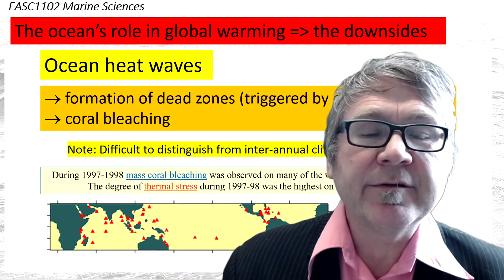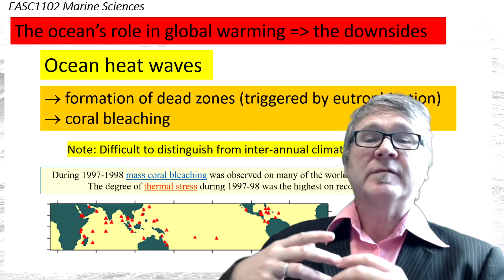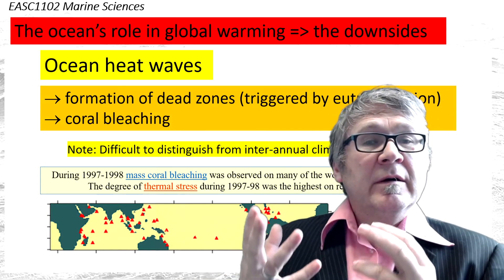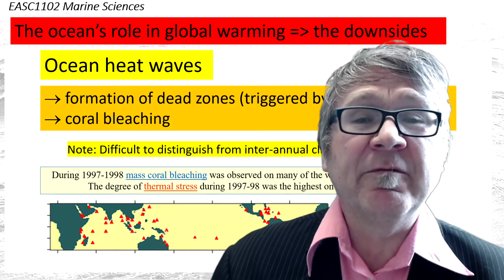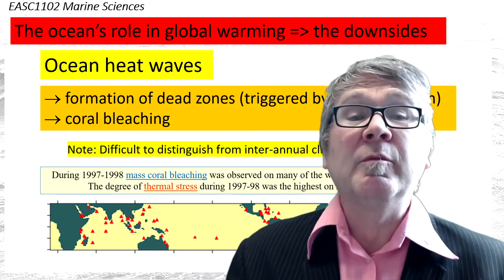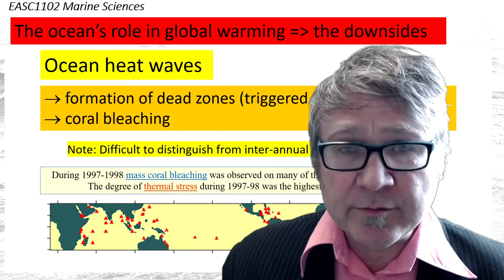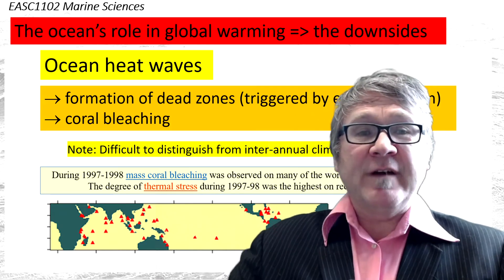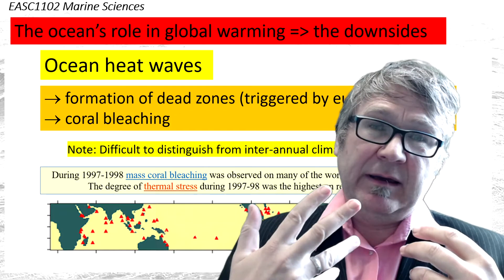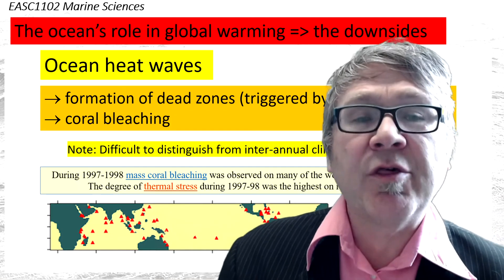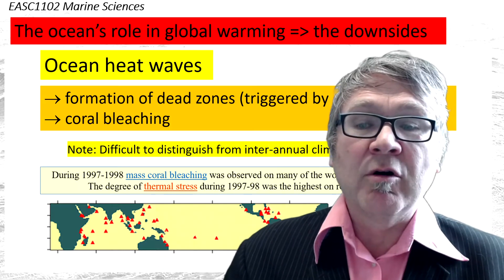There are a few more downsides, and one is ocean heatwaves — changes in the temperatures of the ocean. One famous example is coral bleaching. We're talking about the warm water regions of the ocean and events that cause extreme heat conditions, heat stress, or thermal stress, leading to coral bleaching.